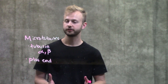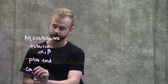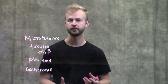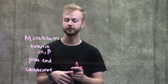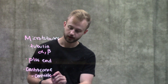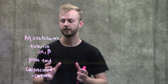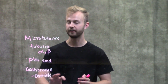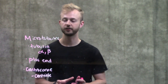In our cells, microtubules typically grow out from a location called the centrosome. Within the centrosome, you have something called a centriole, which is a ring of nine microtubules. From there, everything else grows out to generate the rest of the microtubules in the cell.